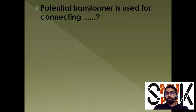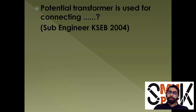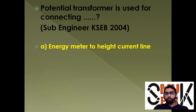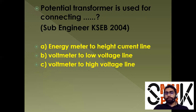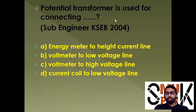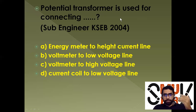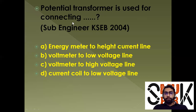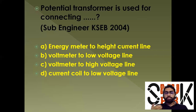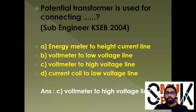The potential transformer is used for connecting — options: energy meter to high current line, voltmeter to low voltage line, voltmeter to high voltage line, or current coil to low voltage. A potential transformer is a step-down transformer used to connect a voltmeter to a high voltage line for safe measurement. Option C is the correct answer.